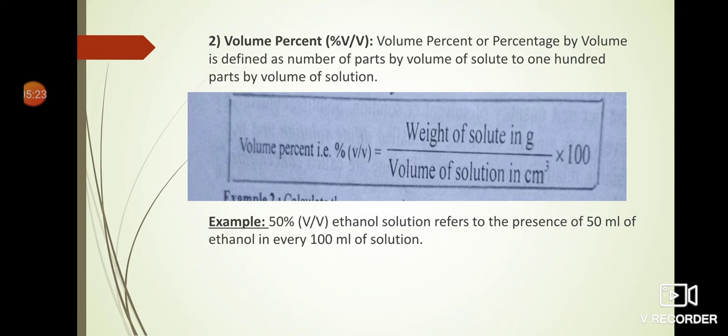Next, we have volume percent. The formula is: when the solute is in solid state, volume percent = weight of solute in gram / volume of solution in cm³ × 100. When the solute is in liquid state, the formula becomes: volume percent = volume of solute in cm³ / volume of solution in cm³ × 100.